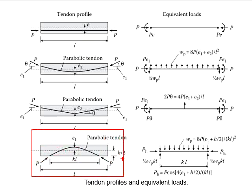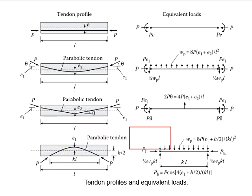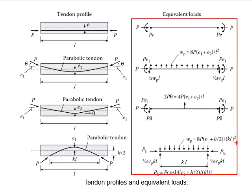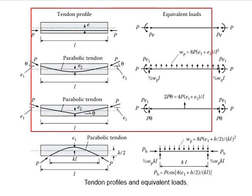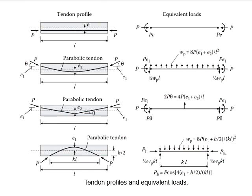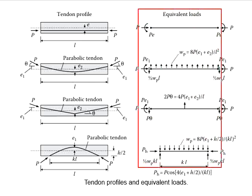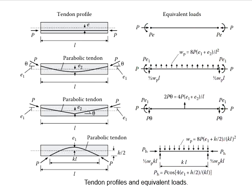If the tendon profile is arranged in this manner, the equivalent load will be as indicated here, appearing in the form of vertical forces, UDL, and compression force. For a continuous member with no external load, you may look at the external loads acting on the member and counter them with different types of equivalent loads so that they cancel out each other, the stress is kept to a minimum, and the pre-stressed member will pass.